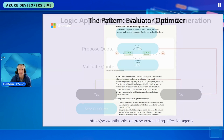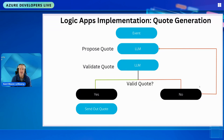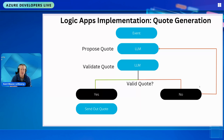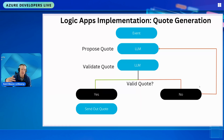Here's the use case: a quote generation system for Fourth Coffee, a fictitious coffee company. A large commercial customer wants to make a big order and go through a quote process. The quote is generated, lands in Dataverse, and we want to construct an email giving that customer their quote using AI in an efficient manner. We listen to a Dataverse event, grab the quote information, and provide it to the LLM to construct an email with specific details.